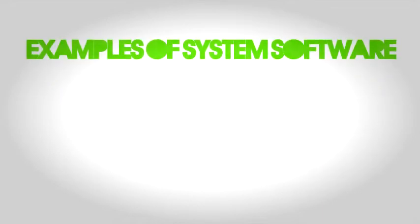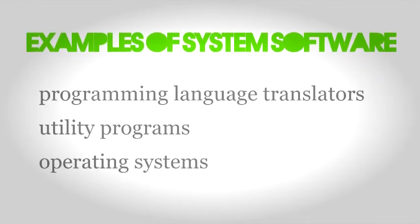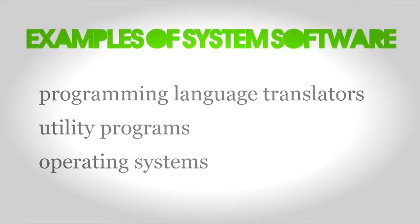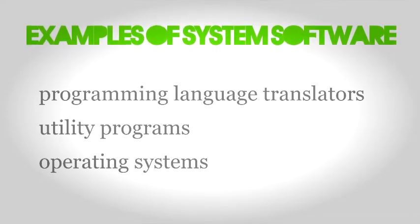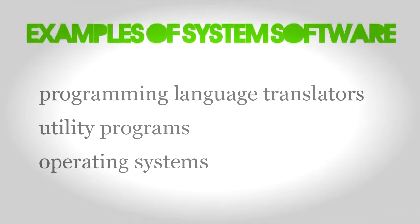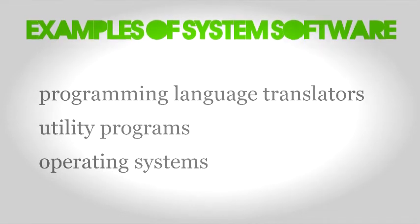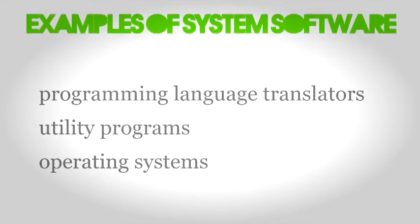Take note that an OS and system software are not the same thing. System software refers to all programs that are related to coordinating computer operations, and OSes are just one example of system software.